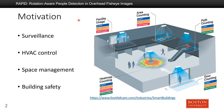Our motivation is to help build modern smart rooms, which typically consist of surveillance, HVAC control, space management, and building safety. All of these features depend on detecting and localizing people, so an indoor people detection algorithm is required.